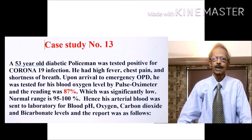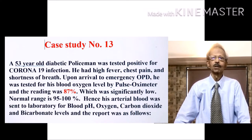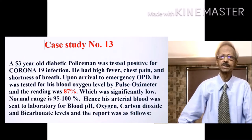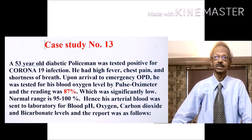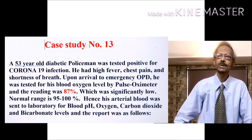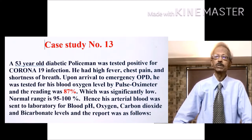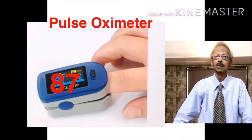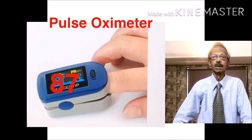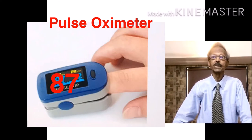Hello. Today I have one more Corona test study for you. A 15 year old diabetic person, a policeman, was tested positive for the Corona-19 infection. He had high fever, chest pain and shortness of breath. Upon arrival to emergency OPD, he was tested for his oxygen level by pulse oximeter and the reading was 87%, which was significantly low.